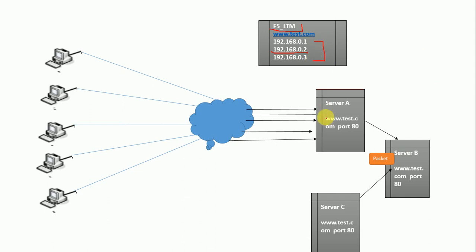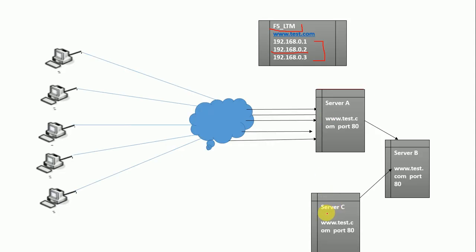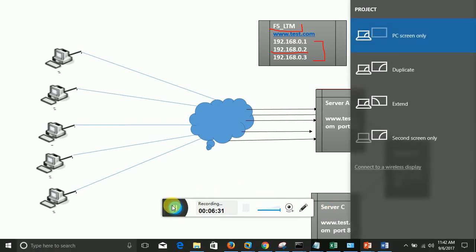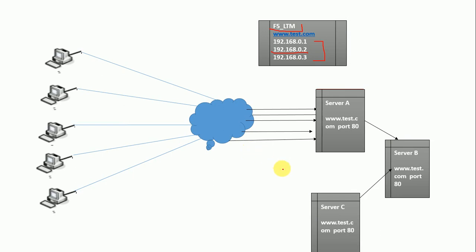Now there is load balancing happening. What if a server goes down? Suppose Server C goes down. F5 is not like DNS — it will send a probe signal to know that this server is not live. It will clear that entry. Now F5 LTM will load balance only between Server A and Server B. One packet goes to Server A, the next to Server B, and so on. There are two types of load balancing in F5 LTM which we may discuss later.